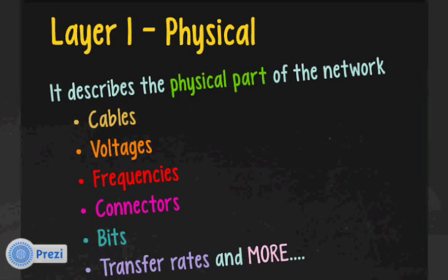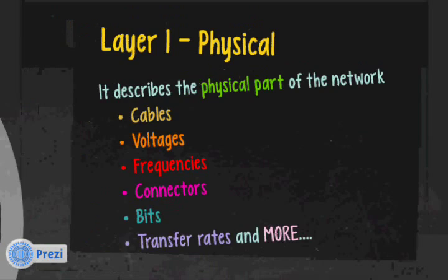The physical layer also describes how we encode bits on the wire — how to represent a bit on a cable. There are different encoding methods: unipolar, bipolar, return-to-zero, non-return-to-zero, and Manchester encoding. It also describes transfer rates: 10 Mbps, 100 Mbps, 1 Gbps, or perhaps 64 Kbps. There's much more that the physical layer, layer one of the OSI model, covers.